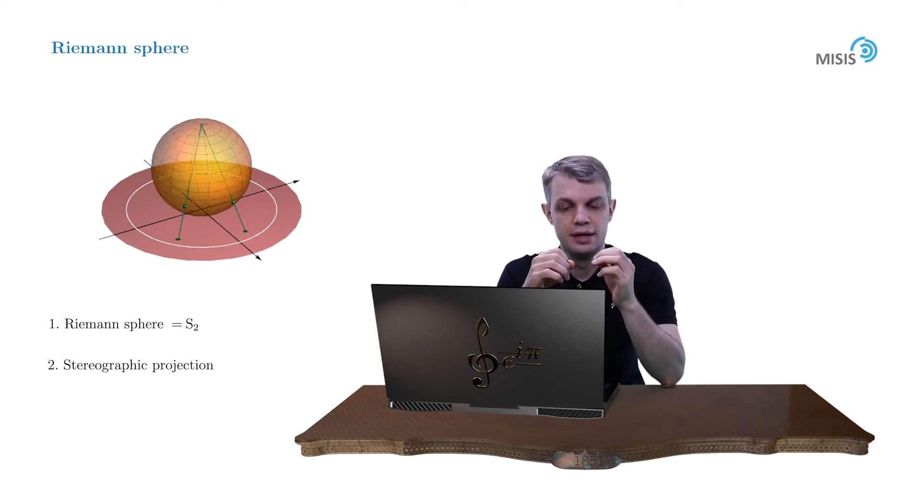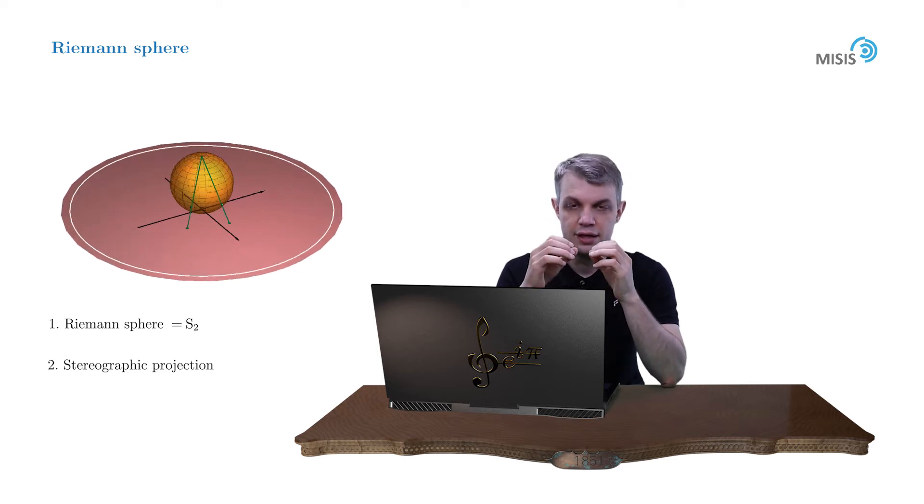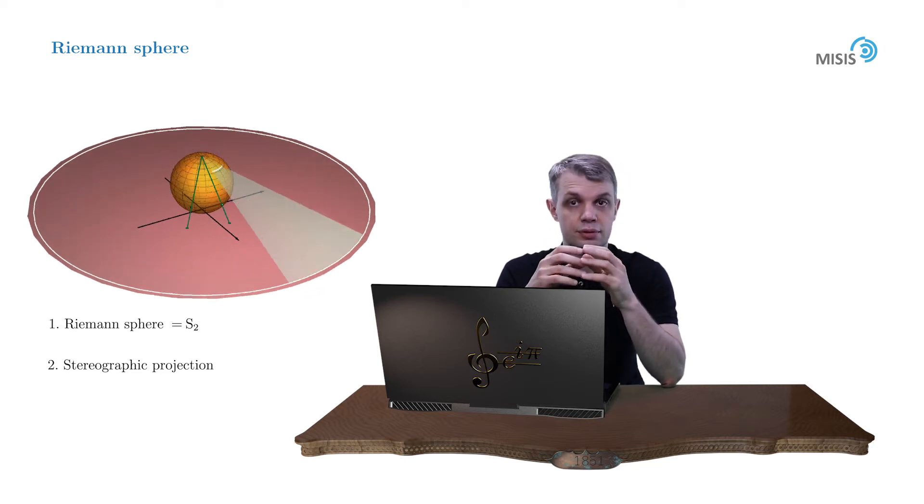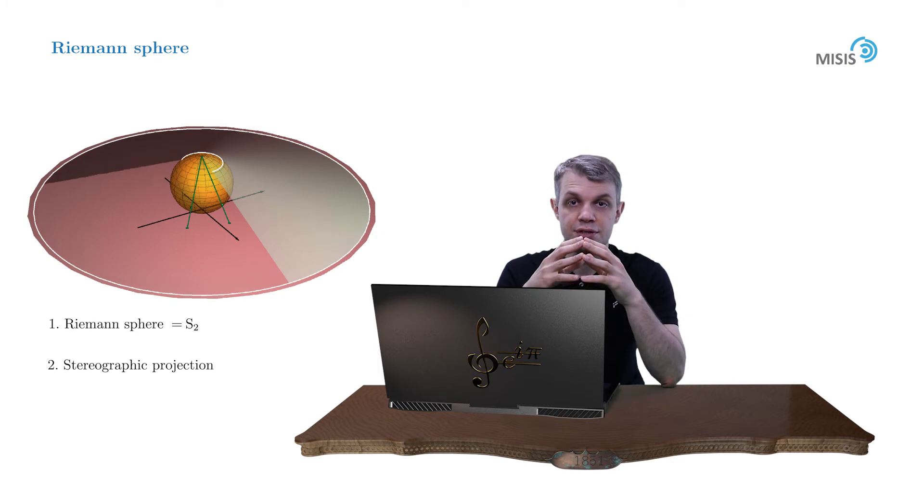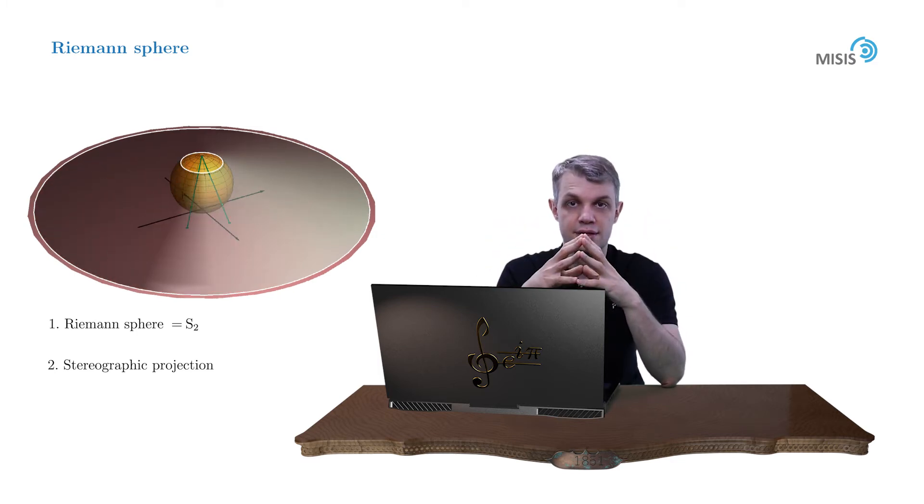Because if you think a little bit then you'll understand that the infinitesimal circle around the north pole on a Riemann sphere is a projection of an infinite circle in a complex plane. So to make this correspondence true one-to-one,